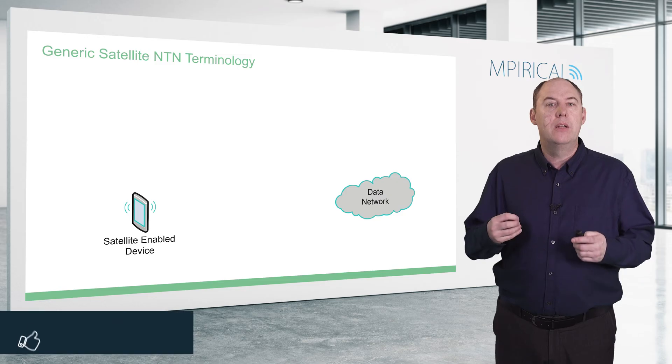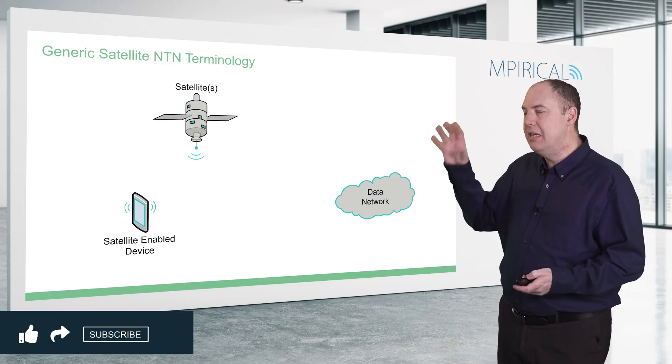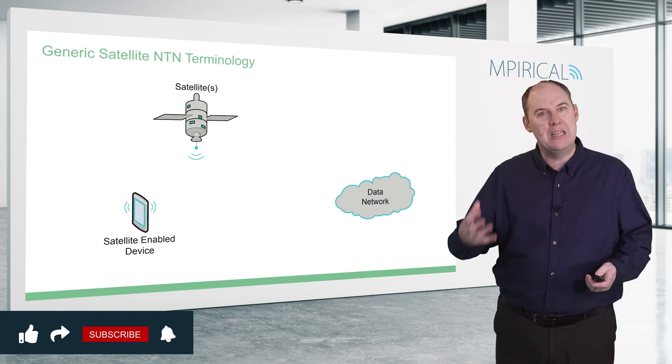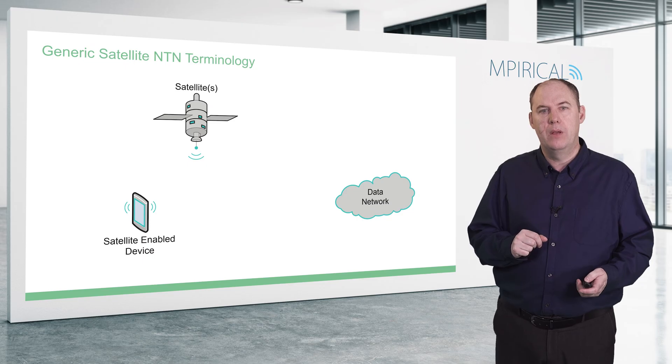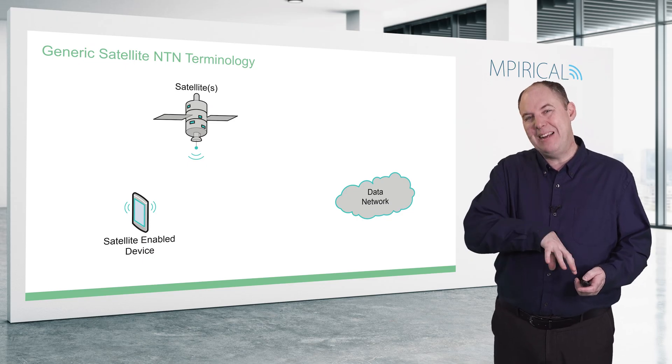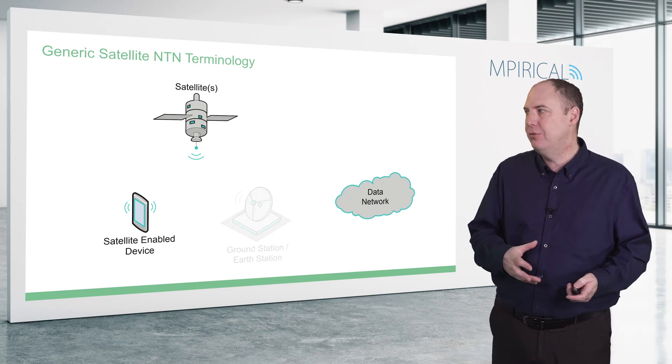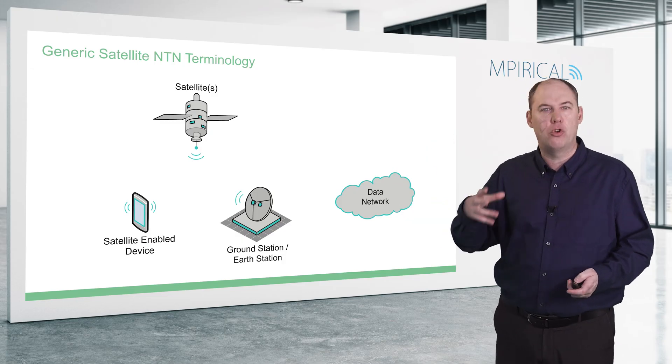Focusing on the terminology with respect to non-terrestrial networks: we have a satellite-enabled device, and using satellite communications as an example, this device wants to connect to some form of data network. If it's a satellite-based system we're going to need one or more satellites, again depending on the type of deployment. The satellite effectively relays the information down to what's called an earth station or ground station.